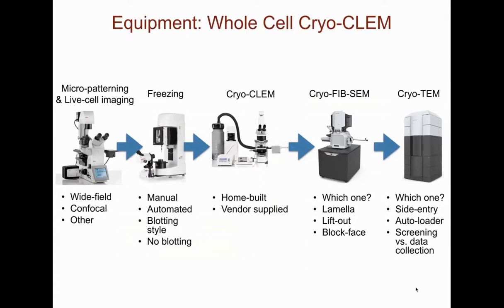We are all investigating exciting biological questions that may benefit from light and electron microscopy imaging. However, we may not know what resources we need or whether we should house them in our own laboratories or use shared resources. For the ideal and highly automated cryo-CLEM workflow, one will need access to live cell imaging systems, a plunge freezer, a cryo-CLEM microscope, a cryo-FIB system for sample thinning, and a cryo-TEM.